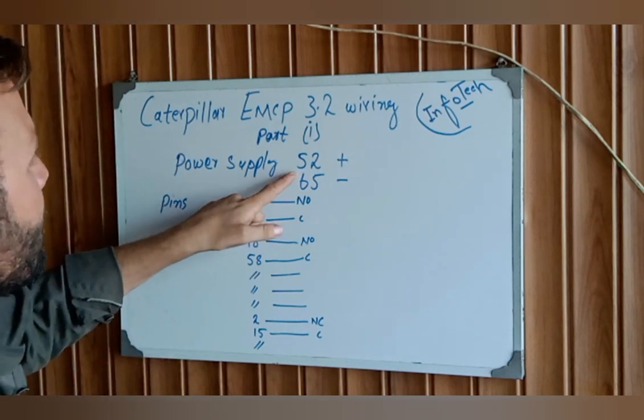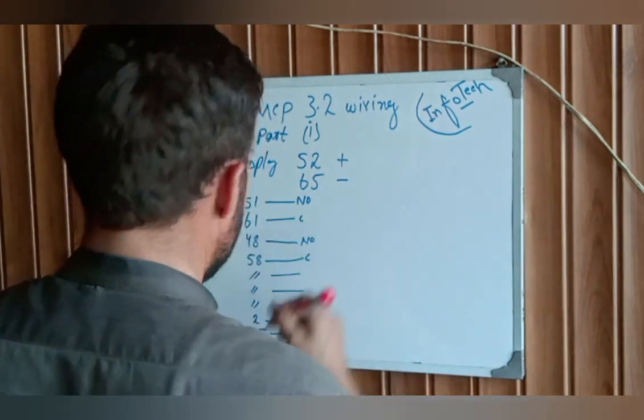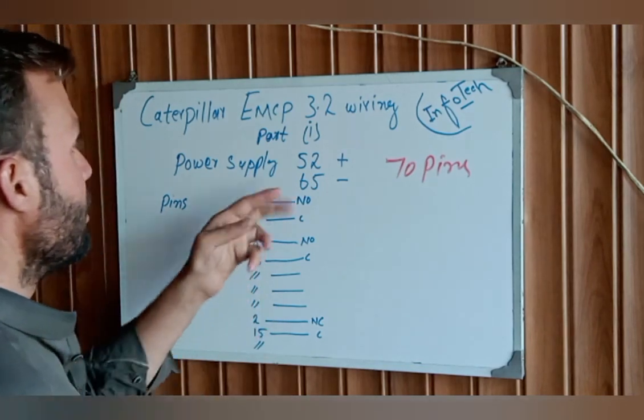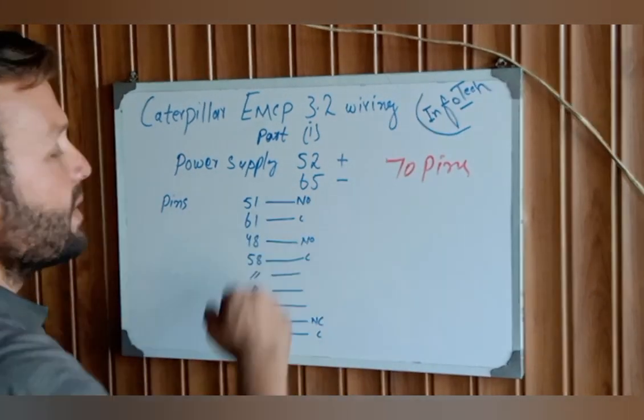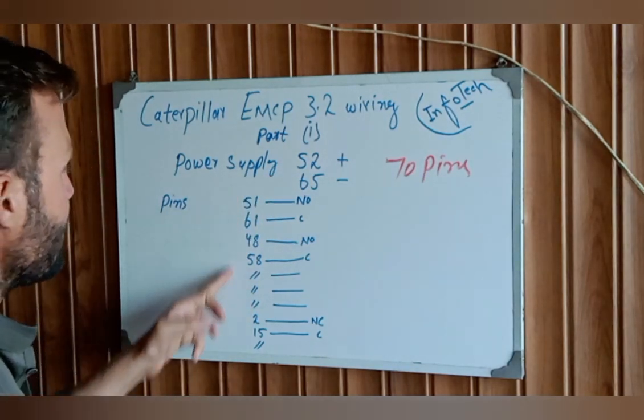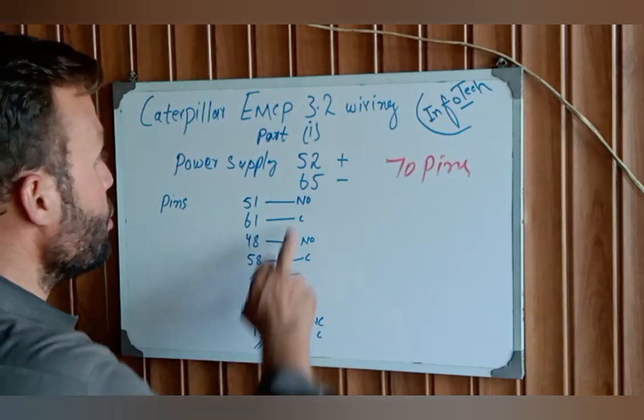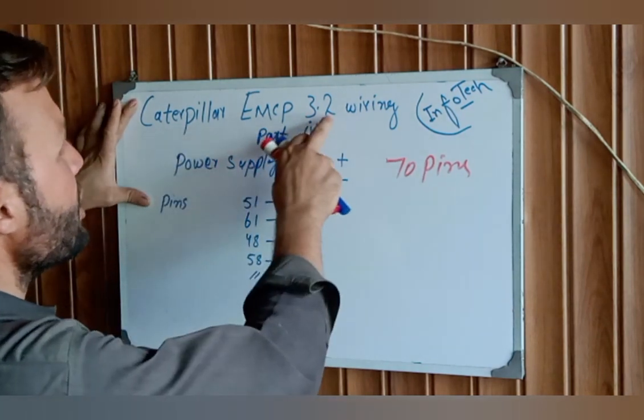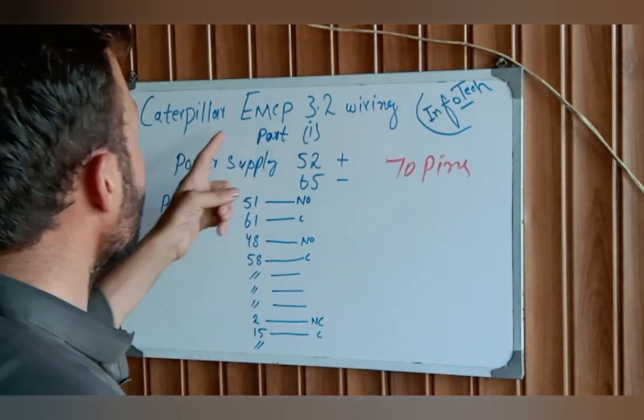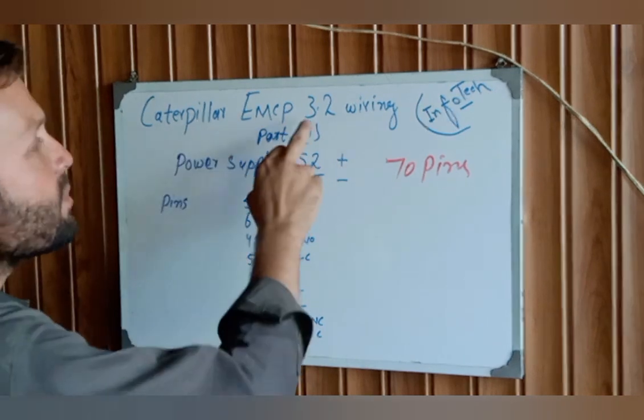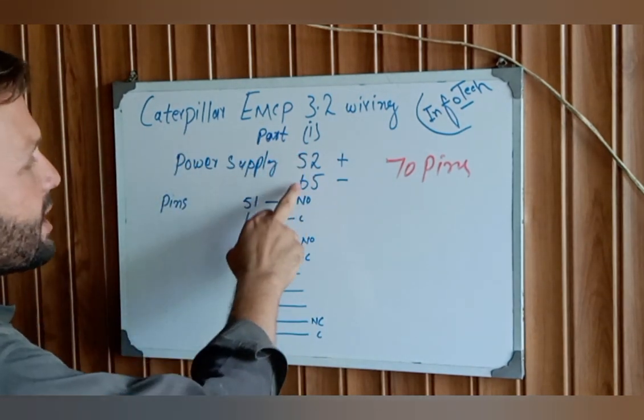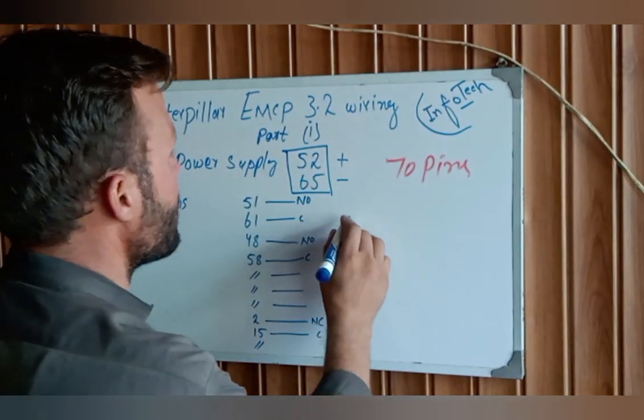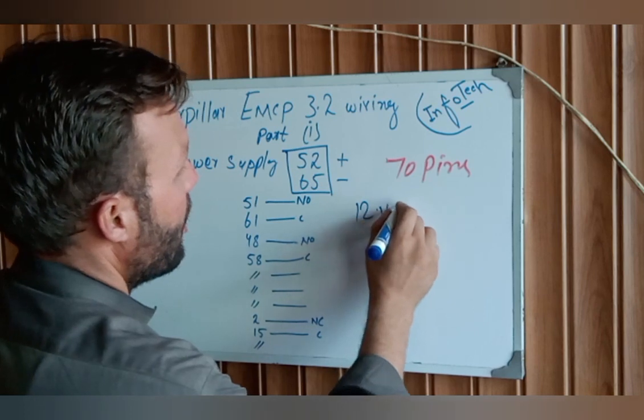First of all, for wake up and turning on, main supply is on the big side, the 70 pins connector. You remove the pin connector and look inside, you'll note these numbers. Pin 52 is your positive supply and pin 65 is your negative supply for turning on the EMCP 3.2 wiring. If your EMCP 3 is not turning on, you check this supply first.